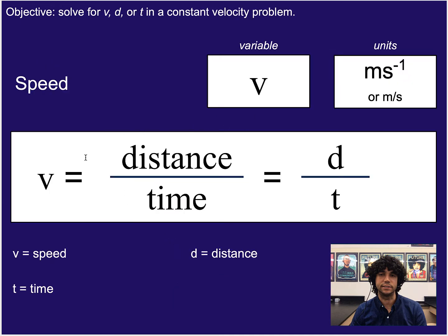The equation for speed is distance divided by time, represented with variables d and t for distance and time. Strangely enough, we use v for the variable for speed. You might wonder — isn't v for velocity? Yes, but velocity and speed are so similar and related that we often just use the same equation v = d/t for both. The variable for speed is v, and units are meters per second (m/s or m·s⁻¹).